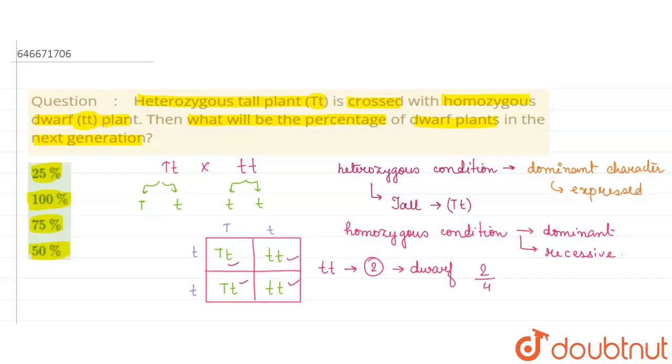So we can say that two out of four are dwarf into 100 for the percentage calculation. So therefore we can say that this will be 50 percent. So we can say that the 50 percent is the only correct answer, rest of the options are wrong. So hope this answer helps you, thank you.